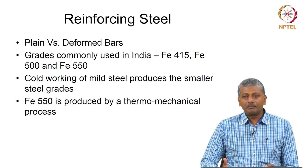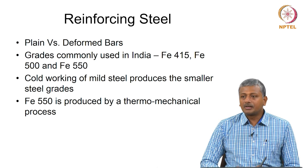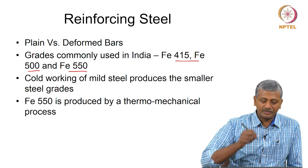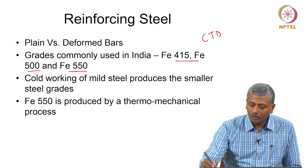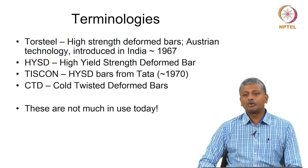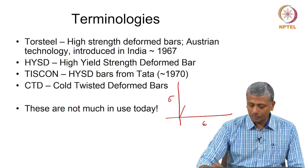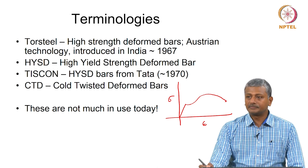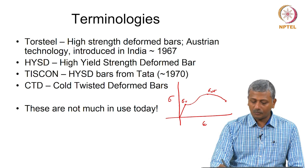Reinforcing steel can come as plain bars, but mostly these days you get deformed bars — bars that have ribs on them. The ribs are there to promote bonding with the concrete. Commonly in India we have three grades: 415, 500, and 550. In the past, people were producing steel with cold twisting, known as CTD bars or HYSD bars. HYSD or CTD bars are obtained from cold twisting of mild steel. If you remember the mild steel stress-strain diagram, you have an initial linear portion, then yielding, then strain hardening, and then failure at a stress lower than the ultimate stress.